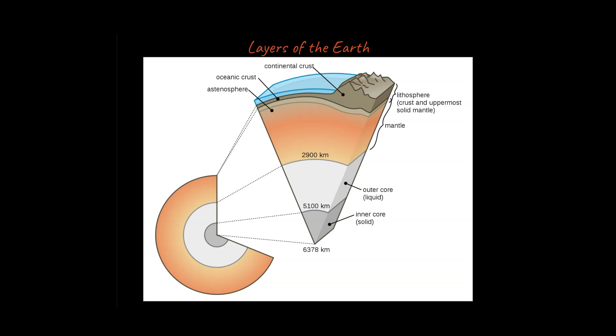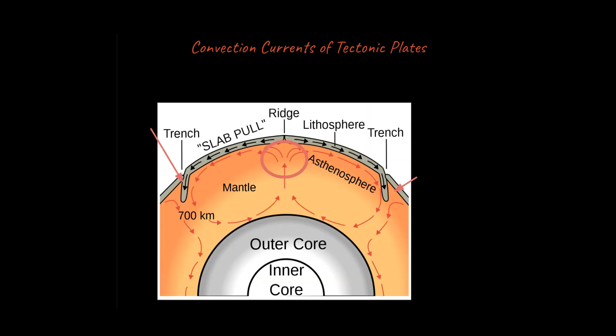There are about 12 major tectonic plates that cover the entire Earth. You could think of them almost like floating rafts. This area, the mantle, is kind of like hot, dense silly putty—so it's solid, sort of, but it can flow over long periods of time.